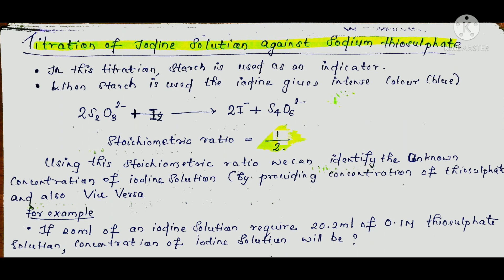The reaction equation is: 2S2O3²⁻ + I2 → 2I⁻ + S4O6²⁻. In this equation, we discuss the stoichiometric ratio. The stoichiometric ratio is 1 by 2. We also need to check the sodium thiosulfate concentration.